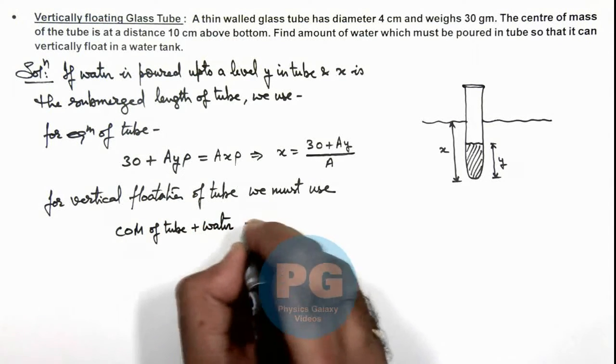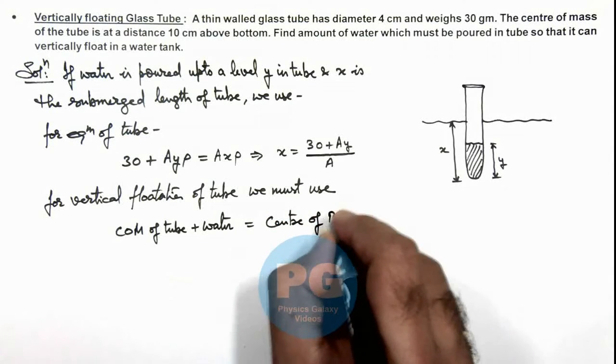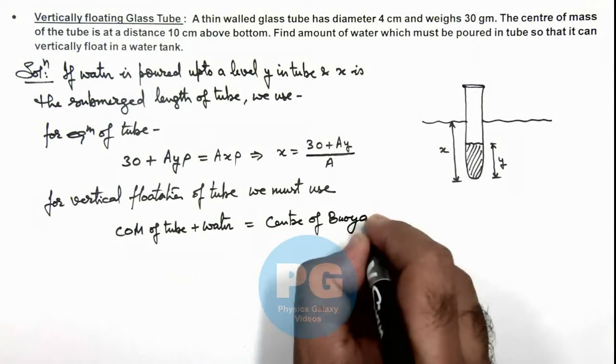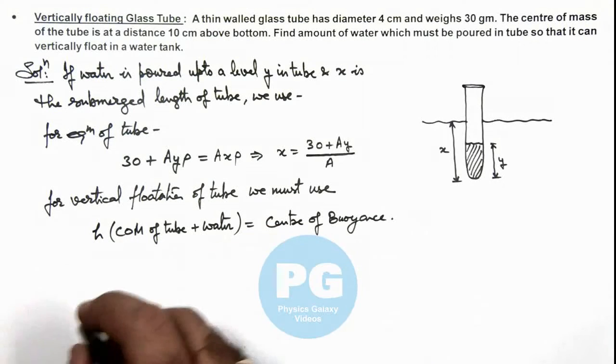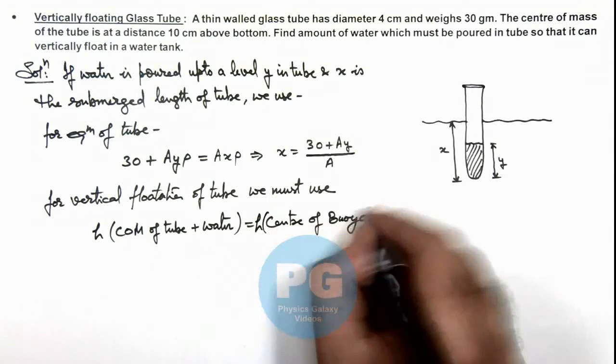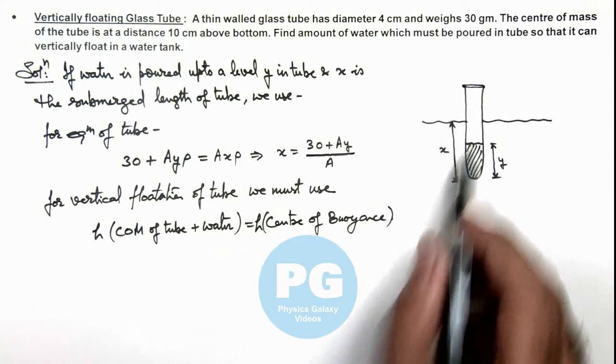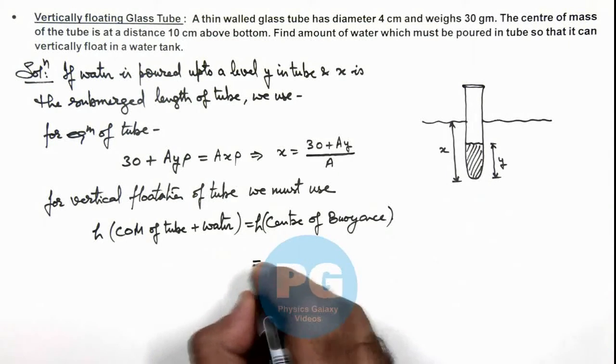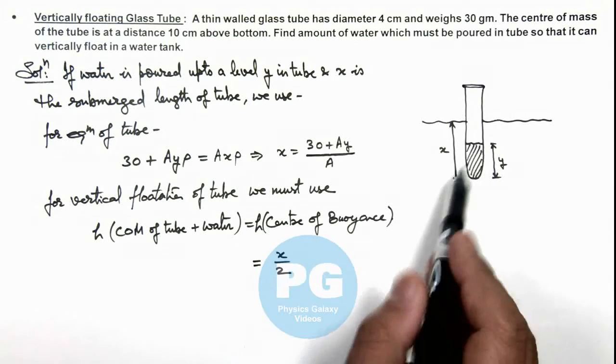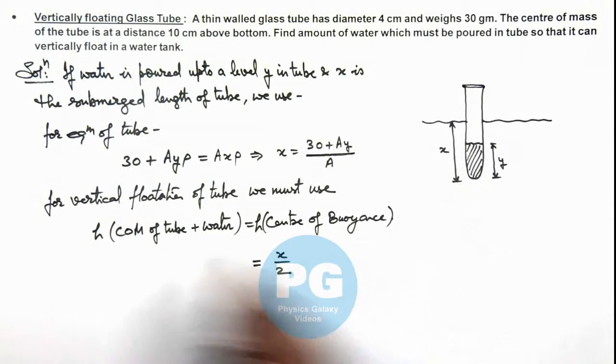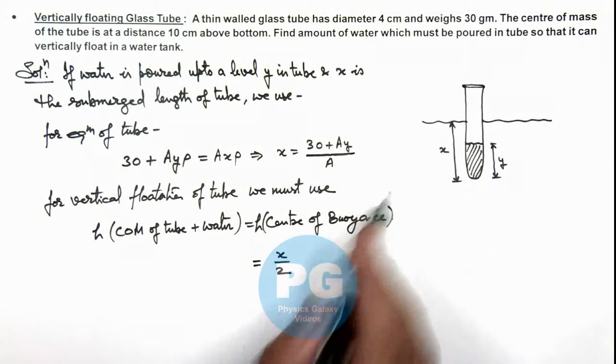The center of buoyancy. Here we are talking about the height of center of mass of tube plus water is equal to height of center of buoyancy. So with the bottom if we calculate this center of buoyancy is located at a distance of x by 2. And if we calculate the center of mass of tube plus water this can be given by the expression m1 x1 plus m2 x2 upon m1 plus m2.